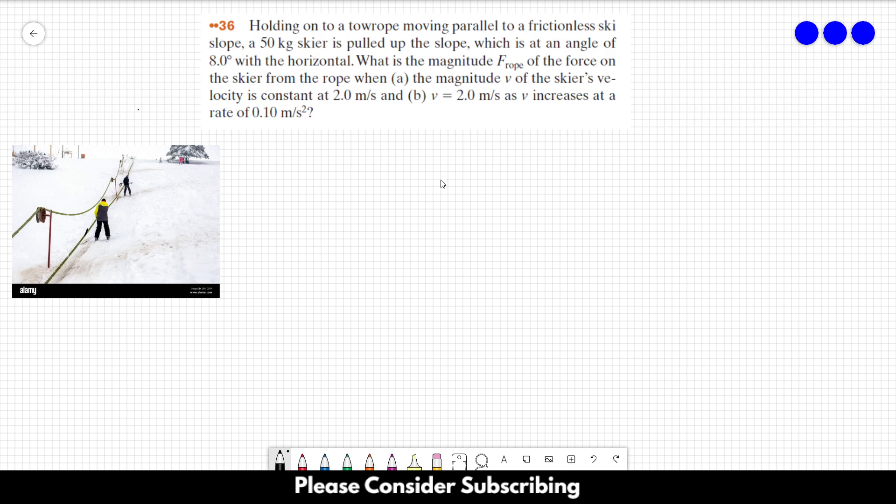The slope is at an angle of 8 degrees with the horizontal. What is the magnitude f of the force on the skier from the rope when the magnitude v of the skier's velocity is constant, and b when the velocity is equal to 2 m per second and v increases at a rate of 0.1 m per square second.